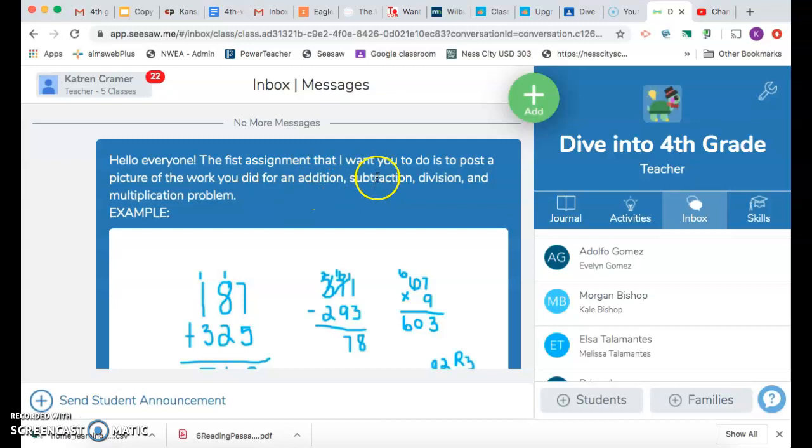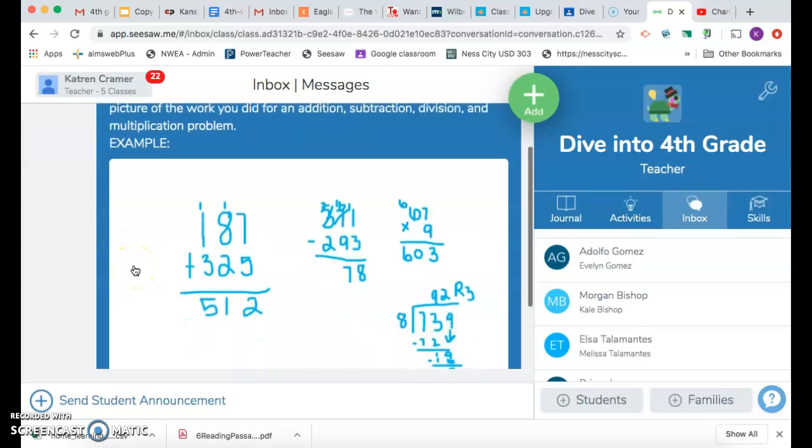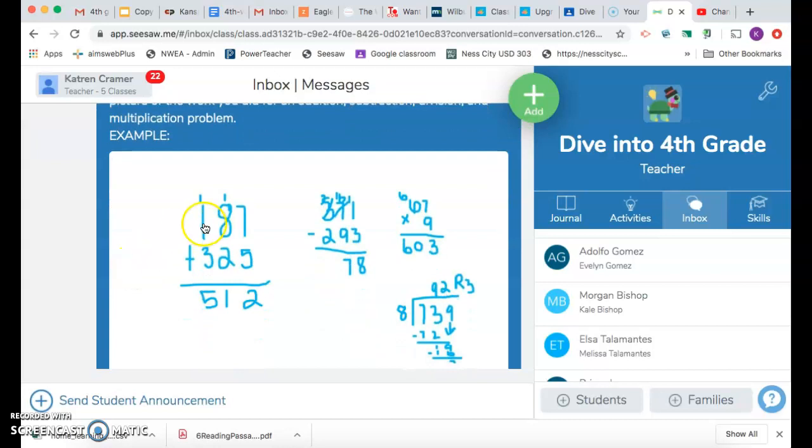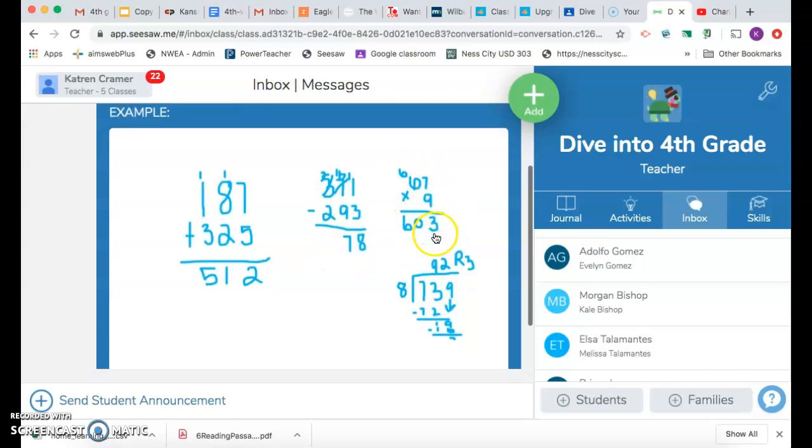The first assignment that I want you to do is post a picture of the work you did for an addition, a subtraction, a division, and a multiplication problem. So I have posted an example. I did 187 plus 325 and I got 512. Then I did a subtraction problem.